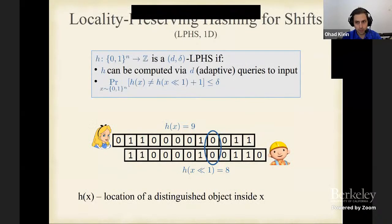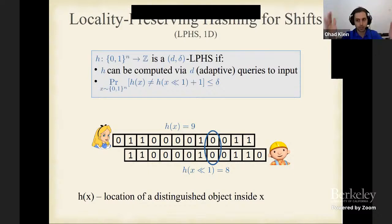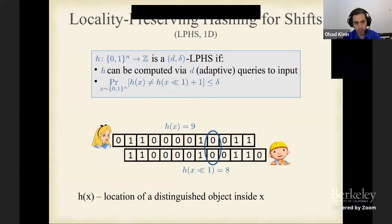This solution has two problems: we do not always have a notable landmark like the Statue of Liberty, and even when we do, finding it takes linear time. So we seek a general and efficient method for communicating relative locations. We introduce the concept of locality preserving hashing for shifts, or LPHS, where given a string we find a distinguished location inside it.